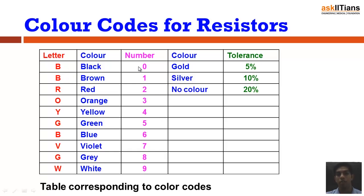This is a table corresponding to different colors, what different colors actually mean. So B, that is black, means 0. B, that is brown, means 1. R, red, is 2. Orange is 3. Yellow is 4. Green is 5. Blue is 6. Violet is 7. Gray is 8. White is 9. So these are for the first two rings, first two color rings.